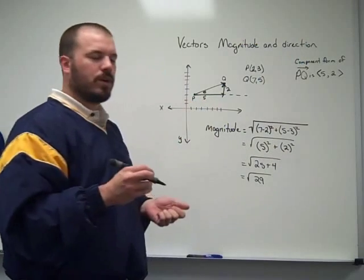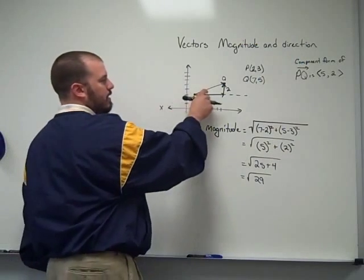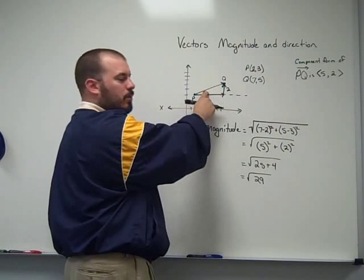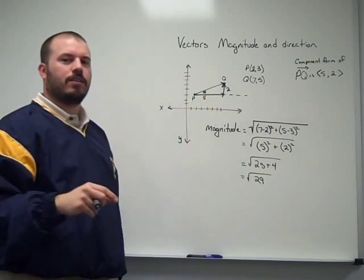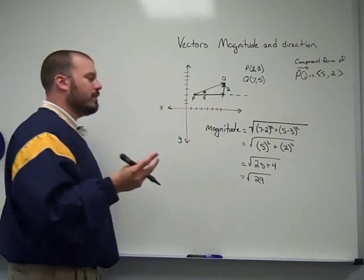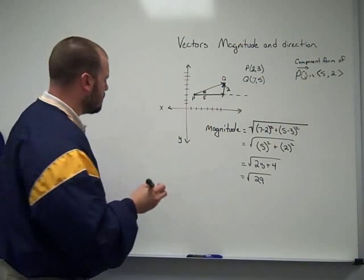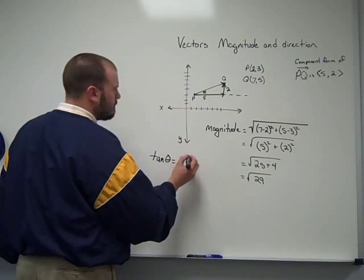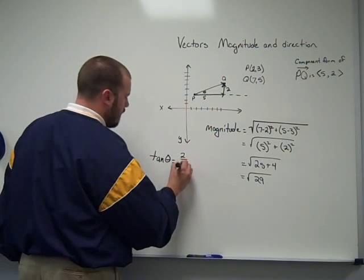So we need to set up a trig equation. So I'm focusing on this angle right here. 2 is opposite of the angle that I'm looking for, and 5 is the leg adjacent to the angle that I'm looking for. Opposite and adjacent, that's tangent. So the tangent of theta is equal to 2 over 5.